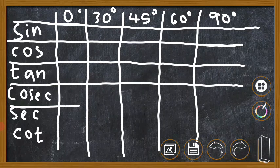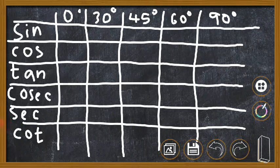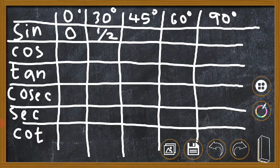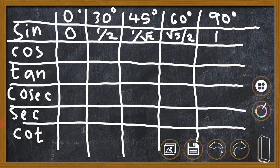I will explain one easy method for studying this table. You only need to memorize the first row — the values of sin. If you learn the values of sin, you can easily complete the entire table. Sin 0 is 0, sin 30 is 1/2, sin 45 is 1/√2, sin 60 is √3/2, and sin 90 is 1.